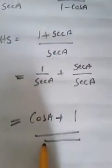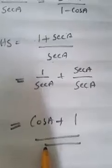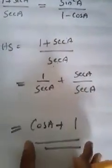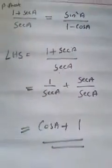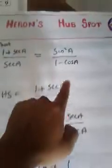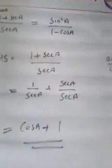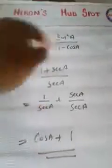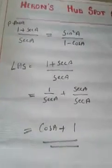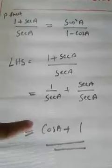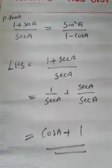So if you follow this particular step, we get a simplified answer. When we simplify LHS, we reached cos A plus 1. We did not reach the RHS directly — we only got cos A plus 1. That's why the hint says to simplify LHS and RHS separately, because if you simplify LHS you may fail to reach RHS.